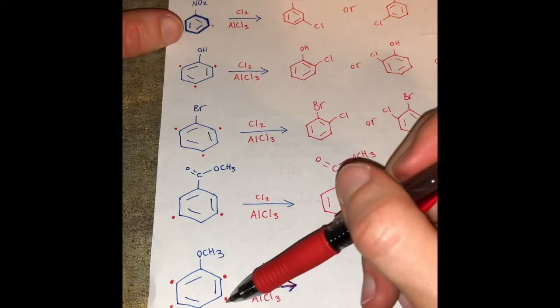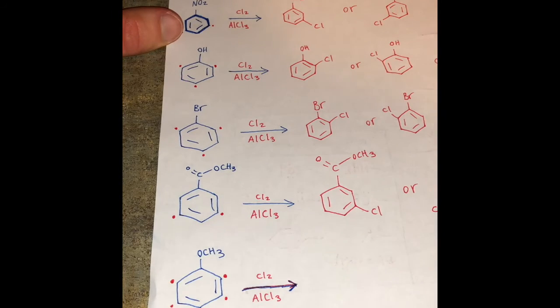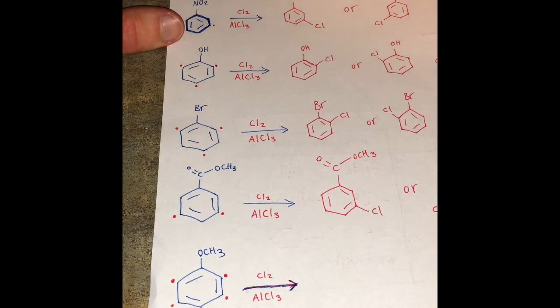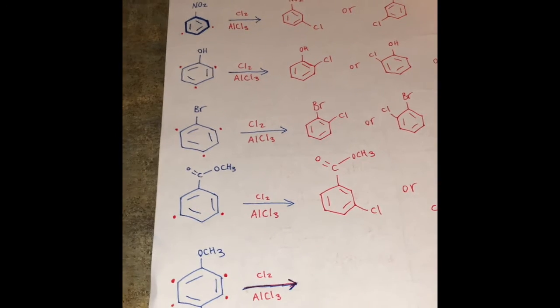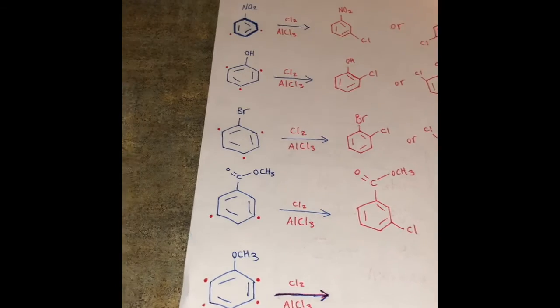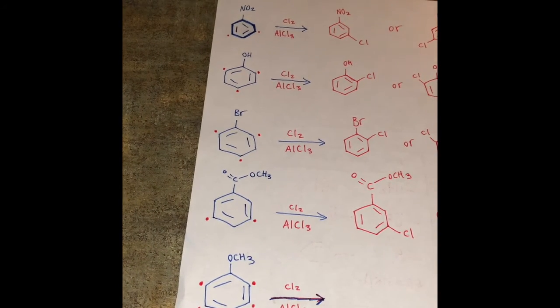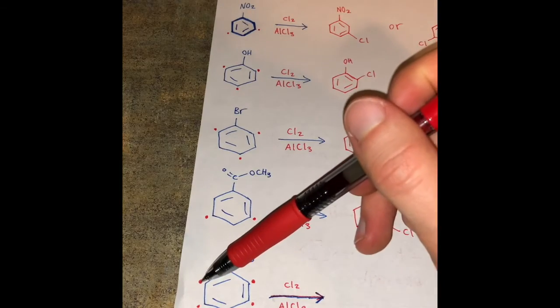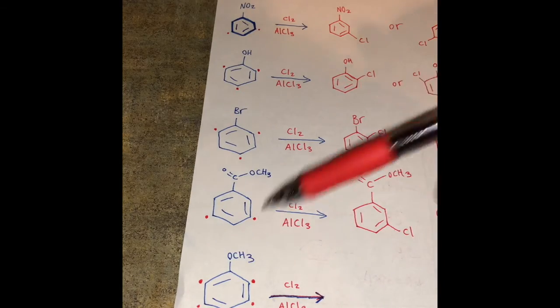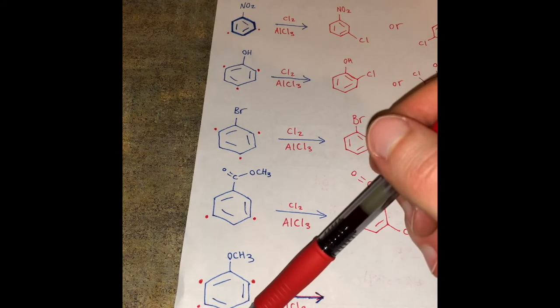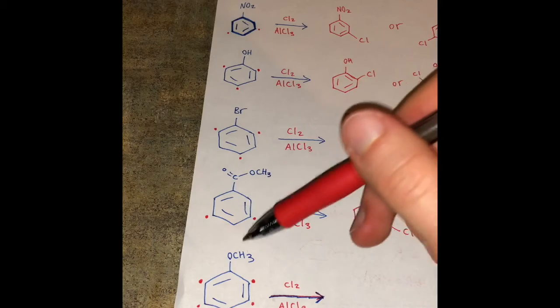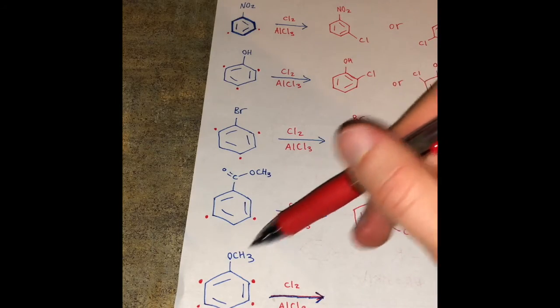Okay so now you might be thinking well we could get any one of these four products right? But there is a small catch here. So the catch is that since the OCH3 is a strong director and the Br is a weak director we're more likely going to get the substituent to add at one of these top ortho positions because OCH3 is a strong ortho para director. Br is a weak ortho para director. So the influence will be larger by the OCH3.